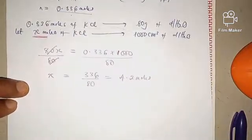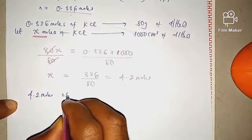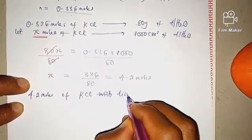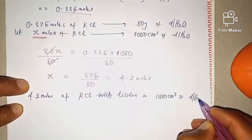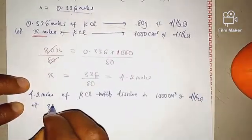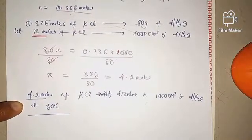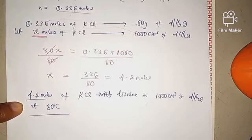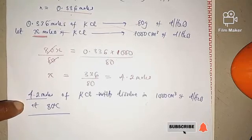What it simply means is that 4.2 moles of potassium chloride will dissolve in 1000 cm³ of distilled water at 30 degrees centigrade, and that is the solubility: 4.2 moles per dm³. That is how to solve this question. I'm going to solve another question in the next video. You can drop your questions or comments in the comment section and I'll go through them. Thank you.